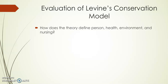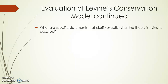Another question from the book was: what specific statements clarify exactly what the theory is trying to describe? Levine proposes the goal of nursing care is to restore wholeness to the person. The way a person returns to wholeness is by adaptation within the person's internal and external environments. To provide patient-centered care, the nurse specifically provides interventions for conservation in four areas: conservation of energy, conservation of structural integrity, and conservation of social integrity.